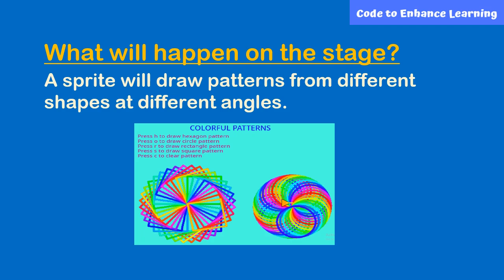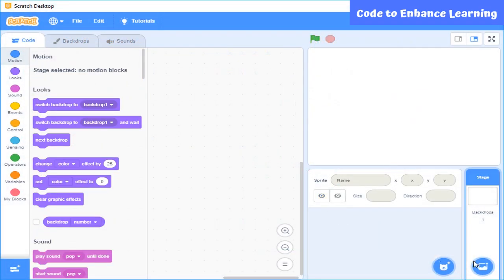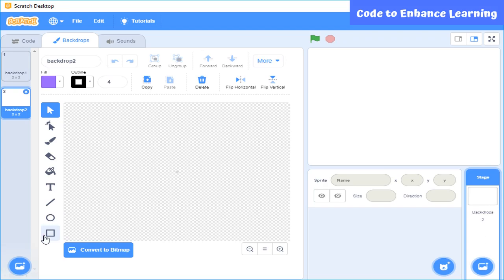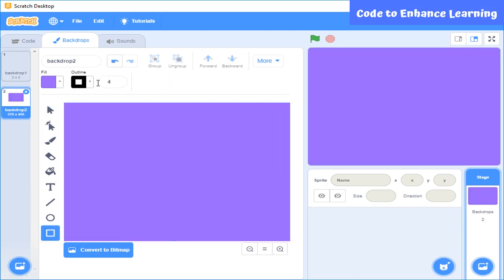What will happen on a stage? A sprite will draw patterns from different shapes and different angles when a given key is pressed on the keyboard. Now, I will think what we will need on the stage. A sprite will be needed which will draw patterns with shape and a backdrop with instructions for users. First, let's start with a backdrop. Here, I am going to draw a backdrop with some instructions in it.